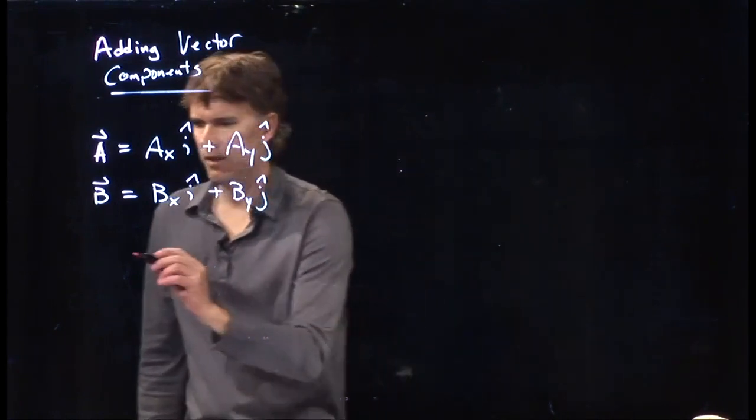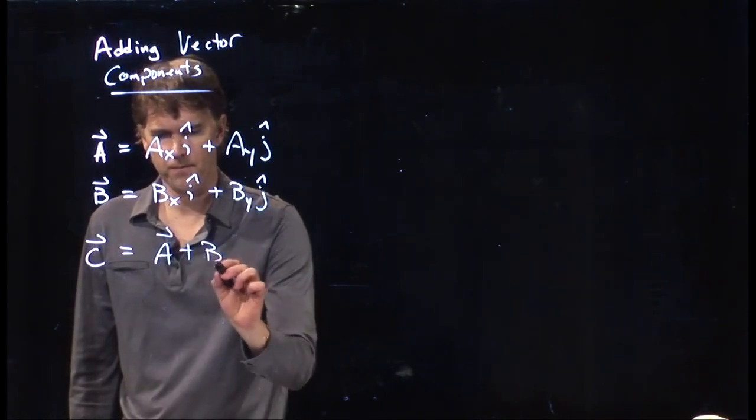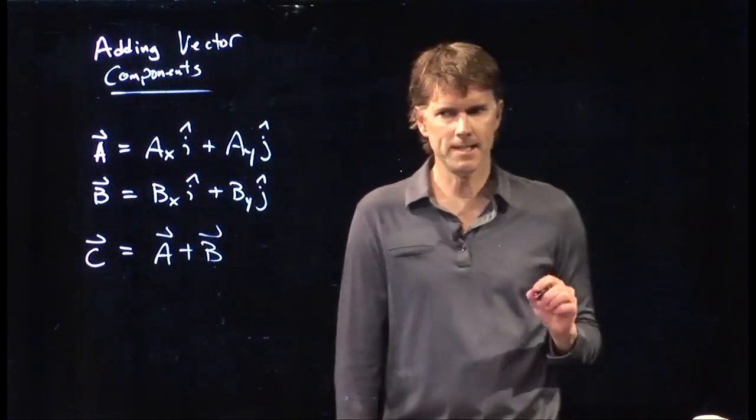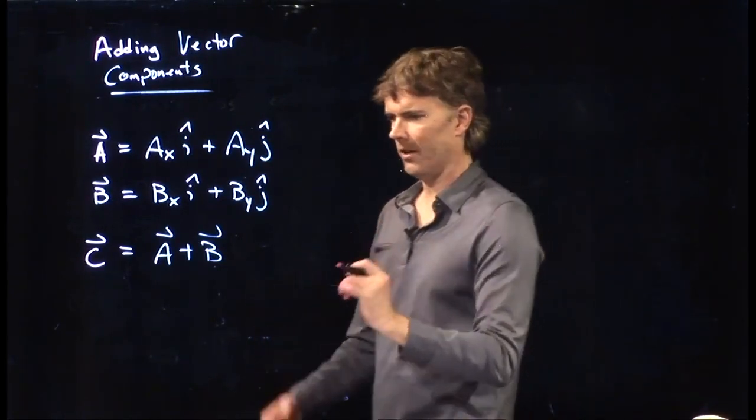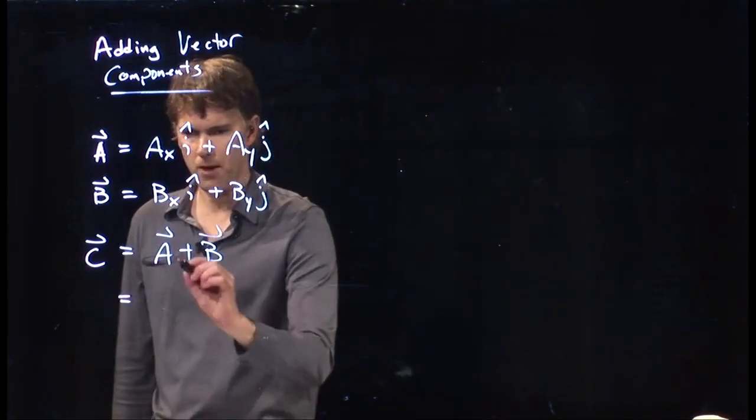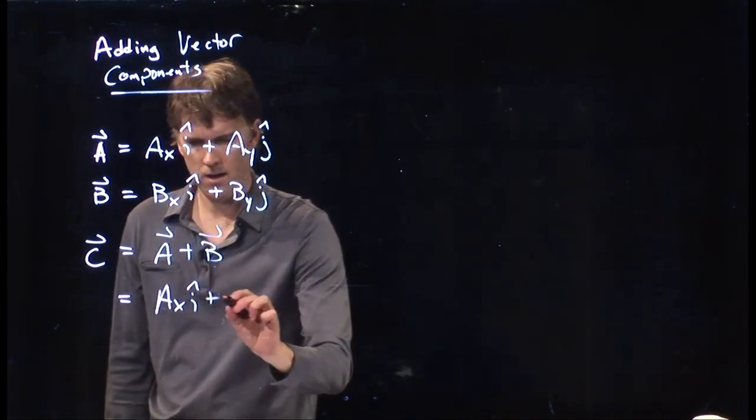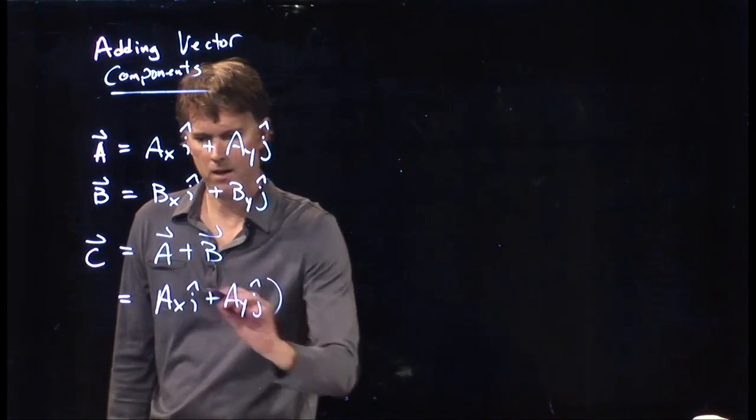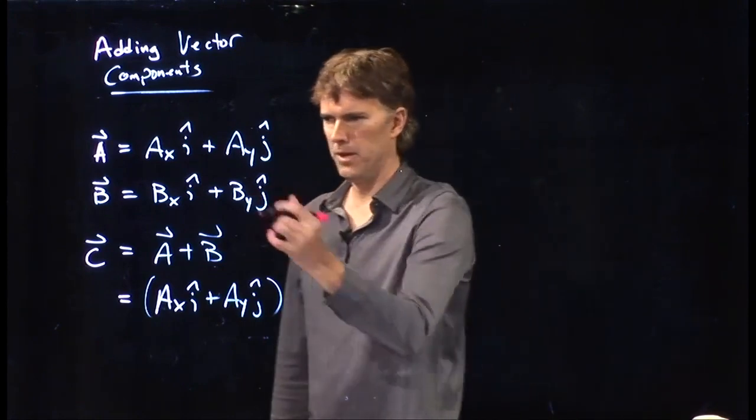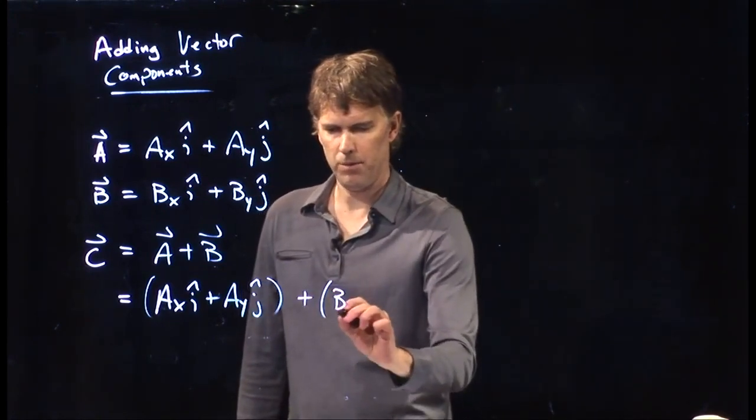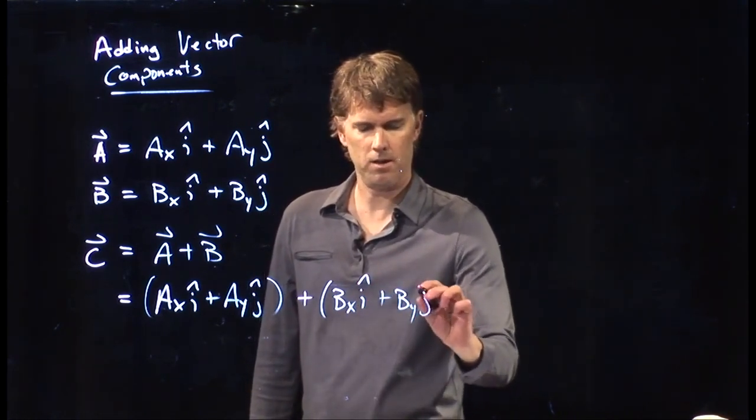And let's calculate C, where C is the sum of those two. How do I deal with this mathematically? Well, we can just plug these things in. C is equal to A, which is this thing: Ax i-hat plus Ay j-hat, put some parentheses around it, plus the vector B, which is this thing: Bx i-hat plus By j-hat.